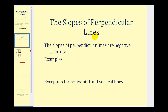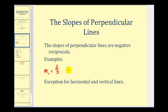One thing we're going to review first is the slopes of perpendicular lines. Remember, the slopes of perpendicular lines are negative reciprocals of one another. For example, if we have a line with slope two-thirds, and the second line is perpendicular to this line, then the slope of the second line would have to be negative three-halves. We flip it over and change the sign.